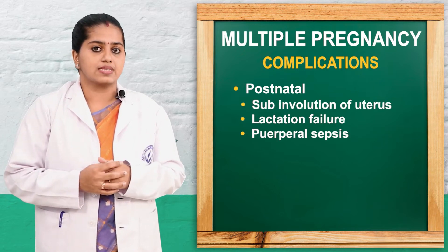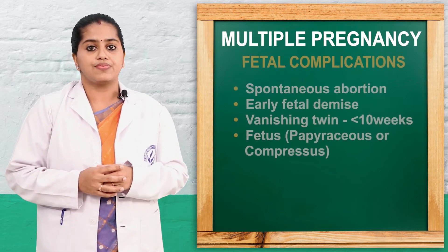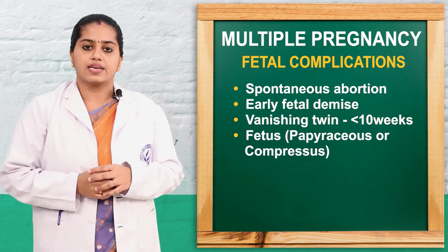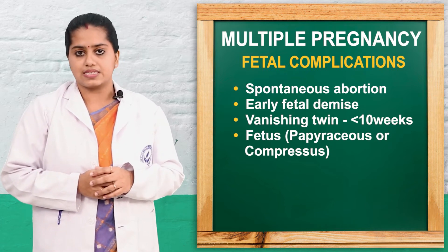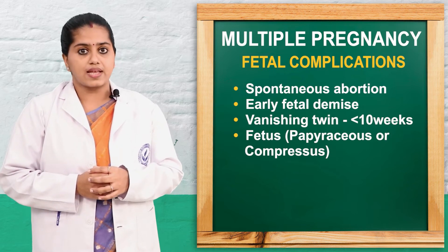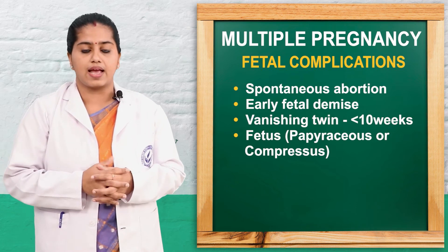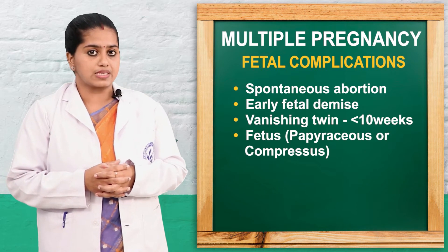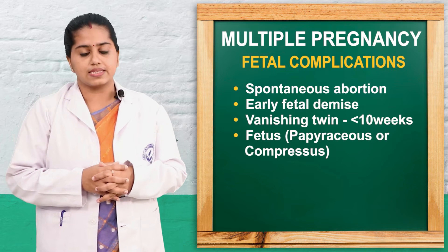In the postnatal period, sub-involution of the uterus, puerperal sepsis, and lactation failure can be seen. Regarding fetal complications: miscarriage and fetal loss can occur. Early fetal demise — vanishing twins — can happen at less than 10 weeks. Fetus papyraceus and compressus refers to death of the fetus in the second trimester. The surviving twin can develop disseminated intravascular coagulopathy, brain injury, hypoxia, infection, and death.